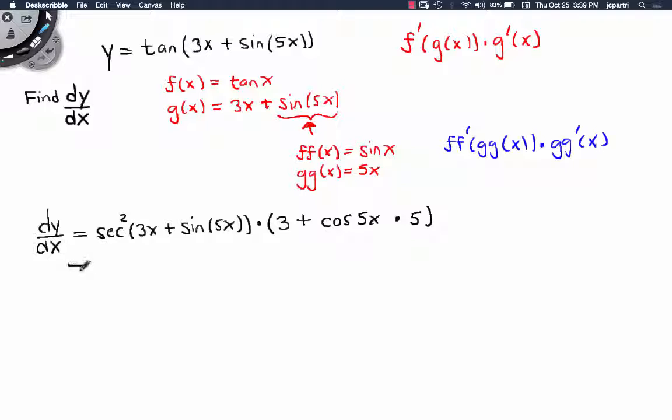And now we can finalize this. We're going to say this is the secant squared of 3x plus the sine of 5x times 3 plus 5 times the cosine of 5x. And there we go.